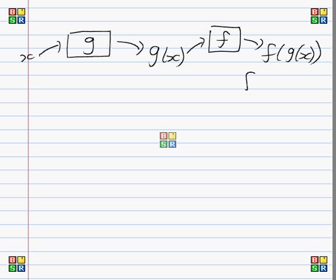Or in other words, f o g of x. That's all a composite function is. It's nothing complicated. It's just two functions in a row.